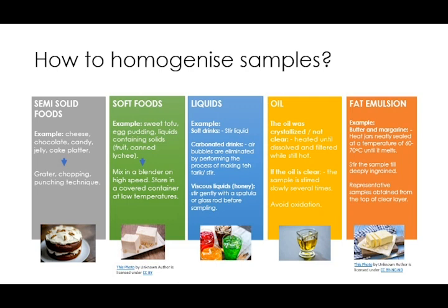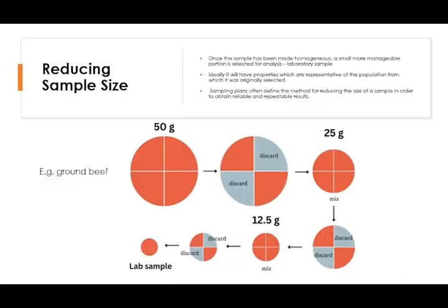For fat emulsions like butter and margarine, heat the jar at around 60 to 70 degrees Celsius until the emulsion melts, stir it, and take your representative sample from the top of the clear layer. You also need to reduce your homogenized sample into your laboratory sample. One popular method is the quartering technique — for example, with 50 grams of ground beef, homogenize and mix them properly, divide into four quadrants, discard opposite quadrants, and combine the remaining two. This gives you half the original sample. Repeat this process until you get around five to six grams sufficient for lab analysis.